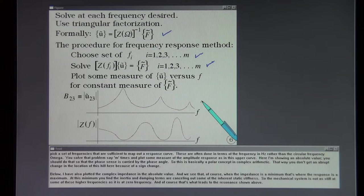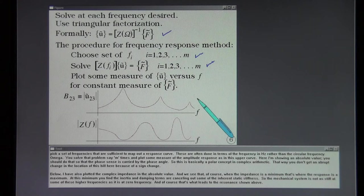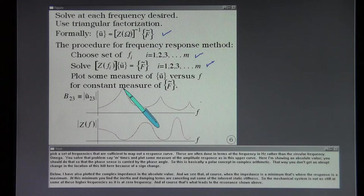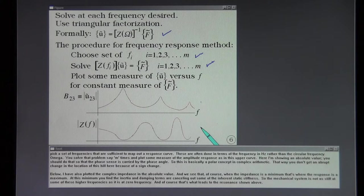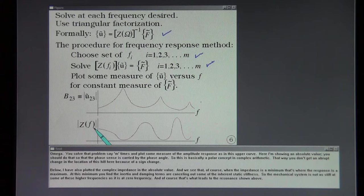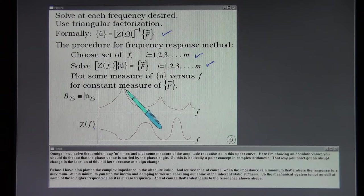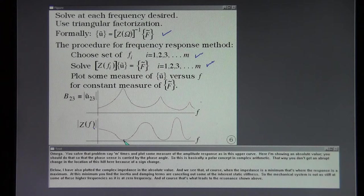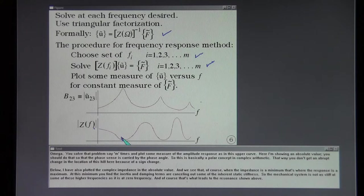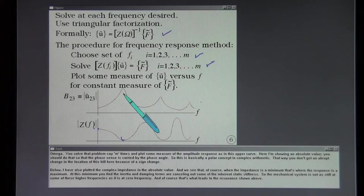Here I'm showing an absolute value. You should do that so that the phase sense is carried by the phase angle. So this is basically a polar concept in complex arithmetic. That way you don't get an abrupt change in the location of this hill here because of a sign change. Below I have also plotted the complex impedance in the absolute value and we see that of course when the impedance is a minimum that's where the response is a maximum. At this minimum you find the inertia and damping terms are canceling out some of the inherent static stiffness. So the mechanical system is not as stiff at some of these higher frequencies as it is at zero frequency. And of course that's what leads to the resonance shown above.